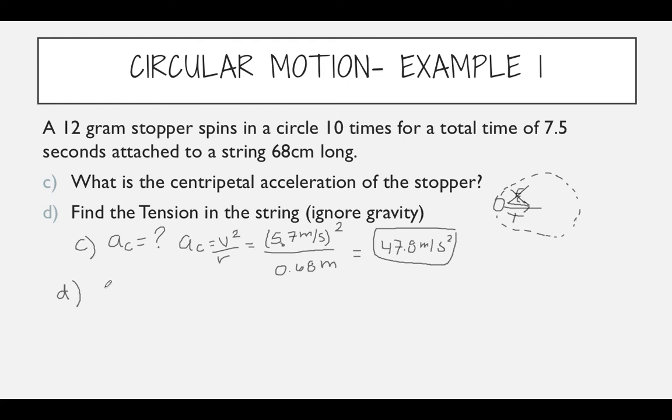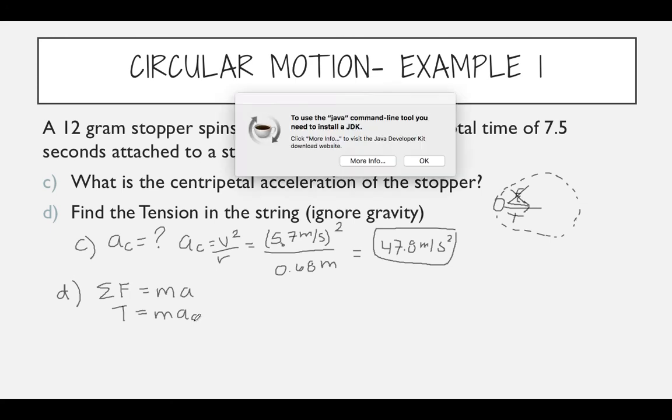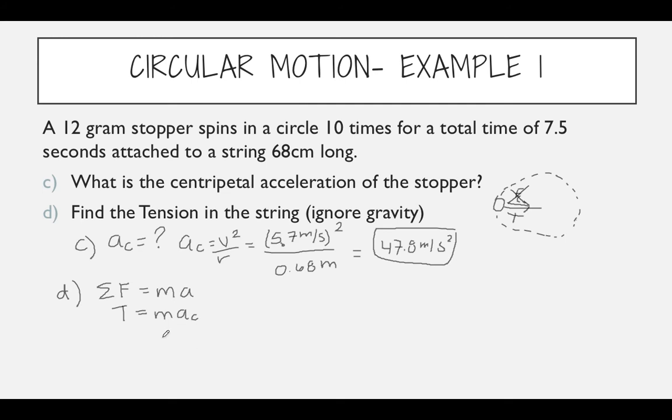So the sum of the forces that is keeping it in a circle is equal to mass times acceleration. That force is the centripetal force. So tension is what's accelerating it, and our acceleration is the centripetal acceleration. So let's go ahead and solve for our tension. We know that the mass was 0.012 kilograms, and our acceleration was 47.8 meters per second. When we multiply these together, we get 0.574 newtons.